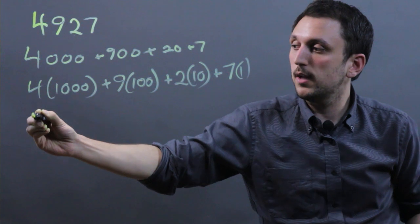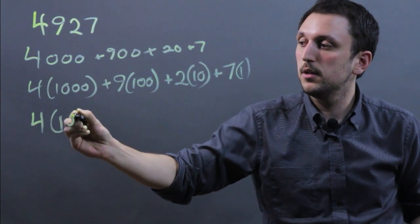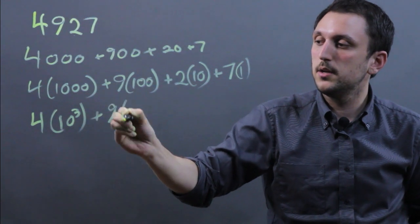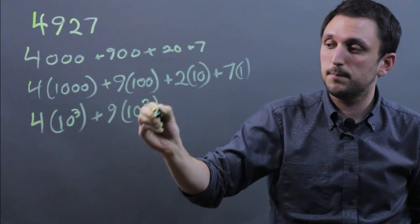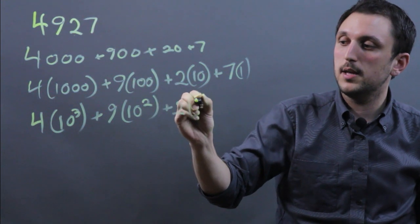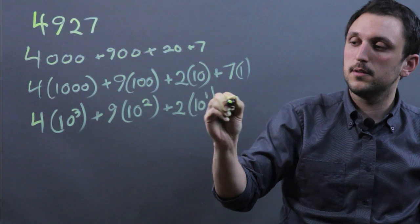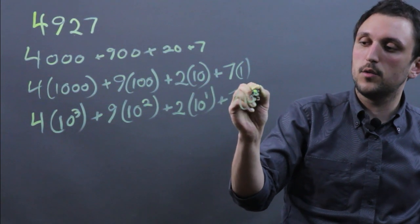So we would say 4 times 10 to the 3rd plus 9 times 10 to the 2nd plus 2 times 10 to the 1st plus 7 times 10 to the 0.